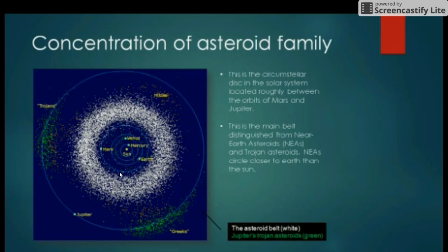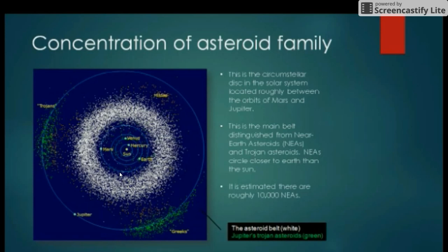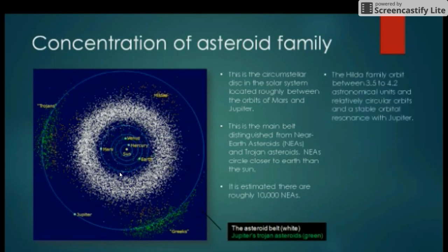NEAs circle closer to the Earth than the Sun. It is estimated there are roughly 10,000 NEAs. The Hilda family orbit between 3.5 to 4.2 astronomical units in relatively circular orbits and stable orbital resonance with Jupiter. And here lies the Greek family.